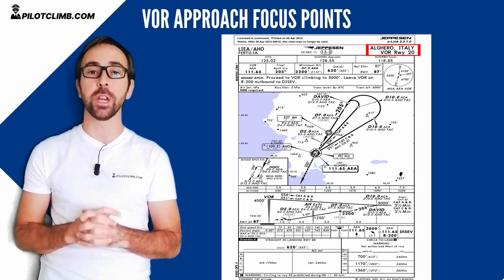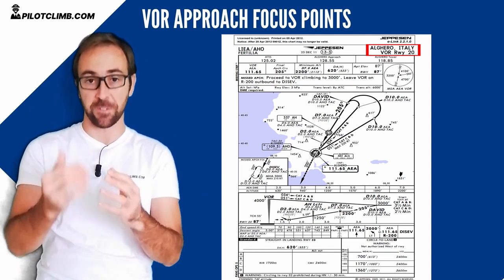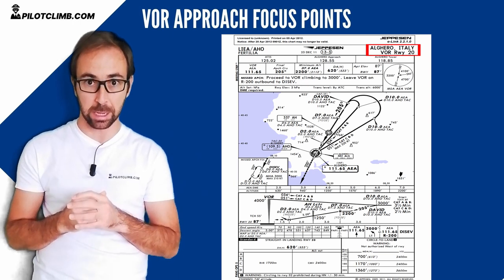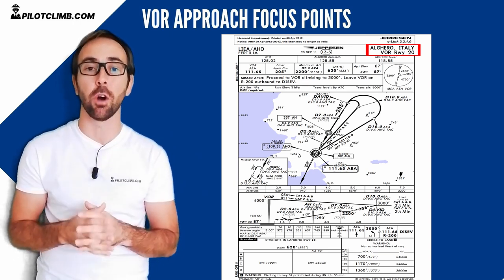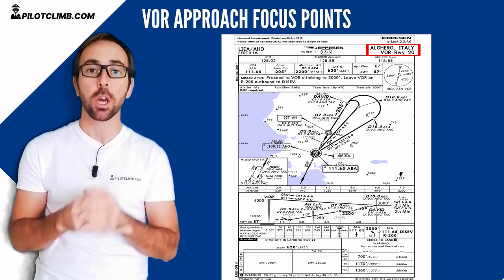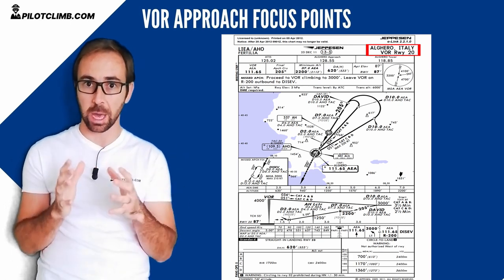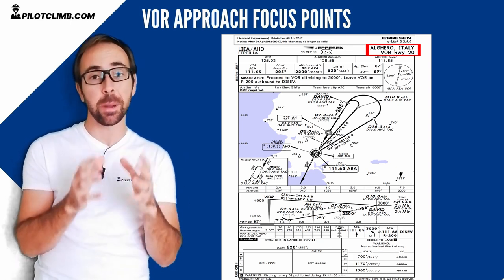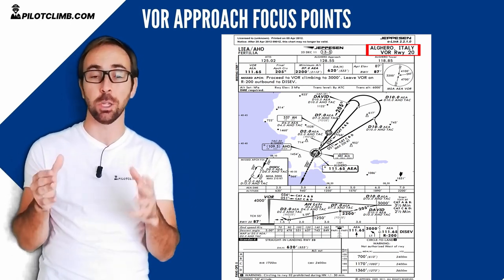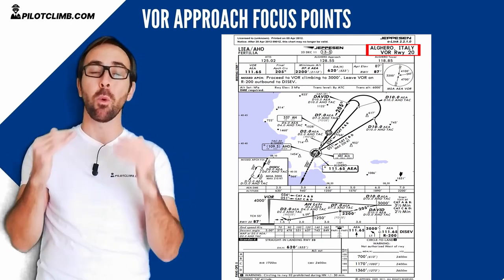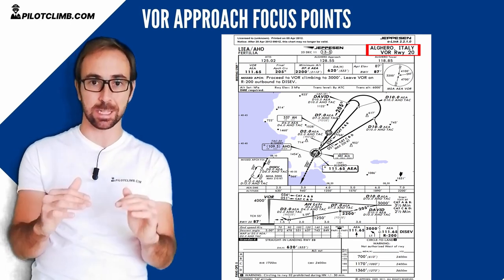You need to make sure you cross the 9 miles at 2,700 feet. If you reach 2,700 feet before the 9 miles, that means you descended with a higher rate of descent than the chart requires. If that happens, it's not a big deal — you just need to level off and wait until the 9 miles, then start to descend again.